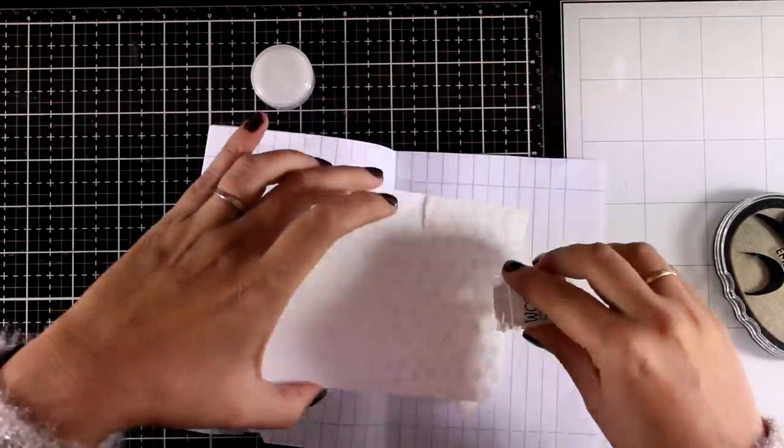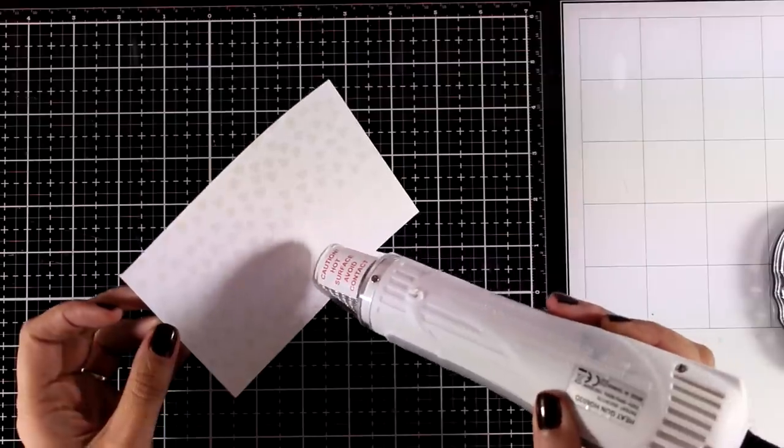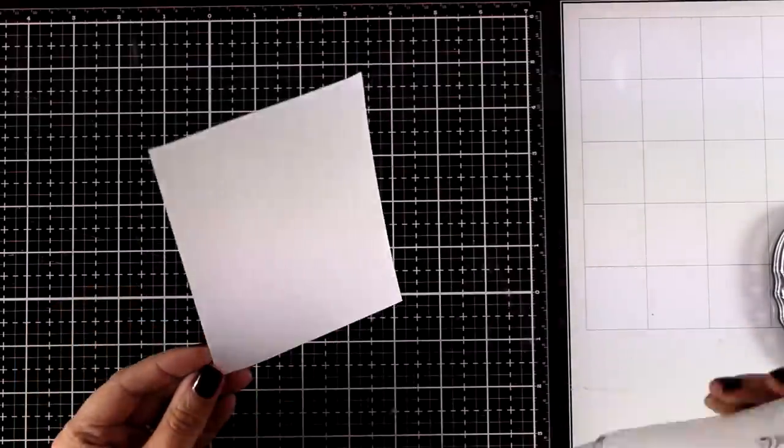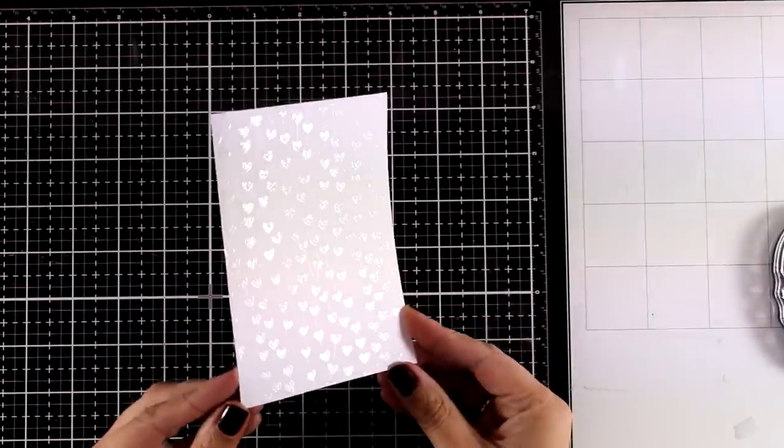Now I am applying white embossing powder and then I'm going to use my heat gun and heat set everything. And instead of using white embossing powder you can also use clear embossing powder with the exact same results.